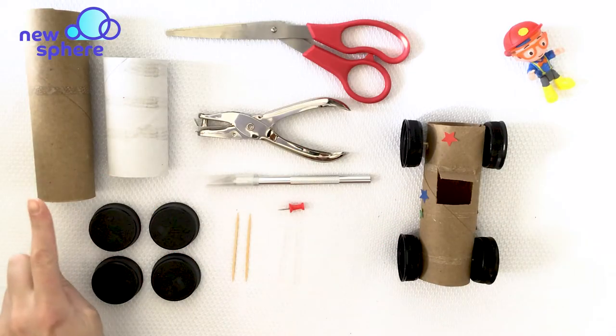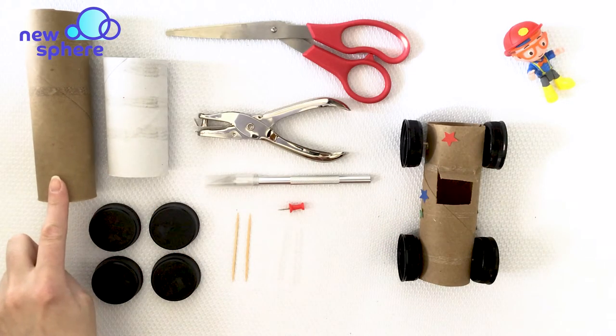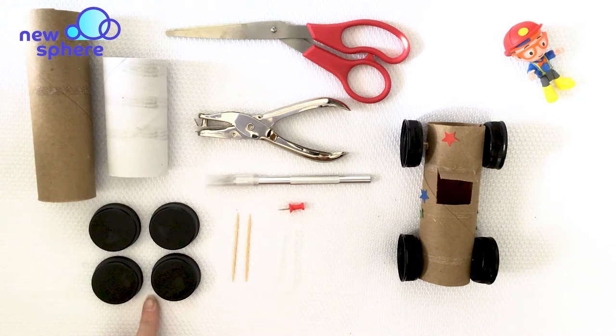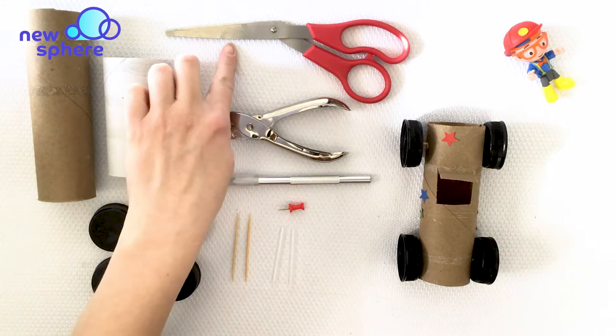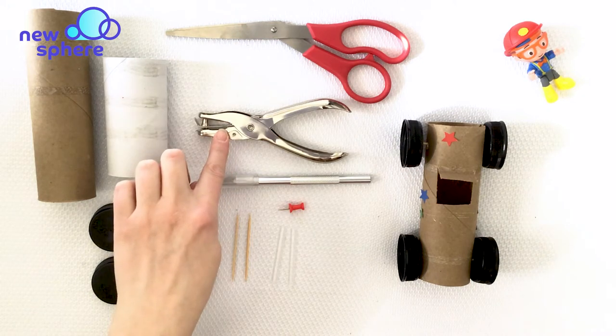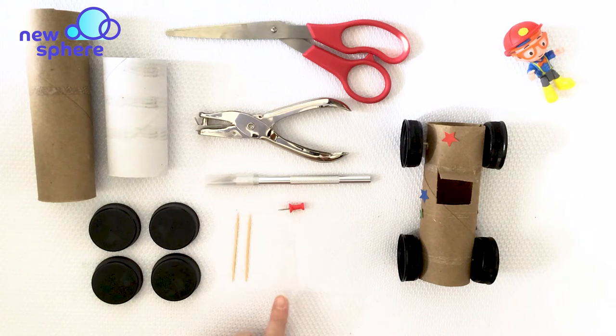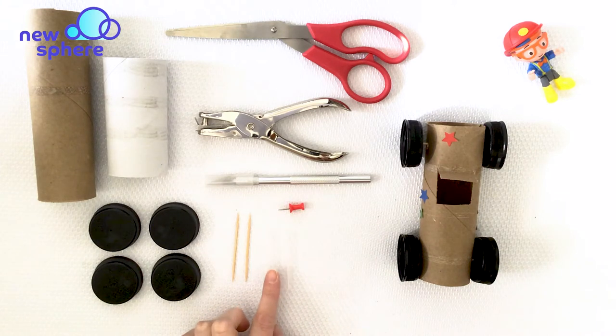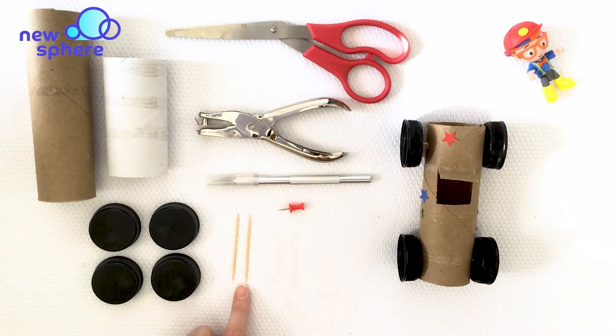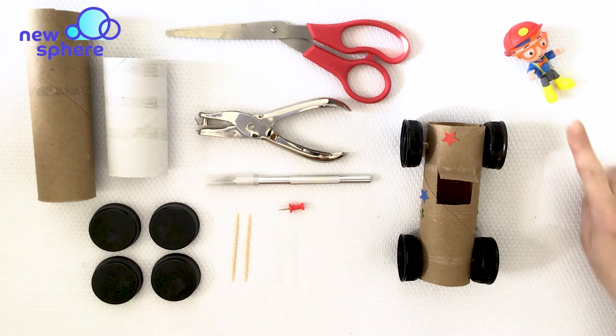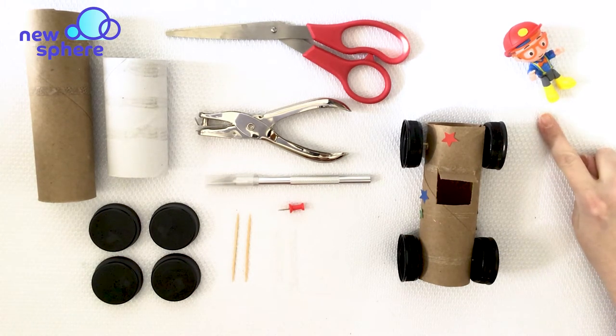You will need a paper towel tube cut in half or a toilet paper tube, four bottle caps (you can experiment with different sizes), a pair of scissors, a hole punch, a craft knife, a thumbtack, a drinking straw cut into two two-inch long pieces, two toothpicks, and an optional figure for racing.